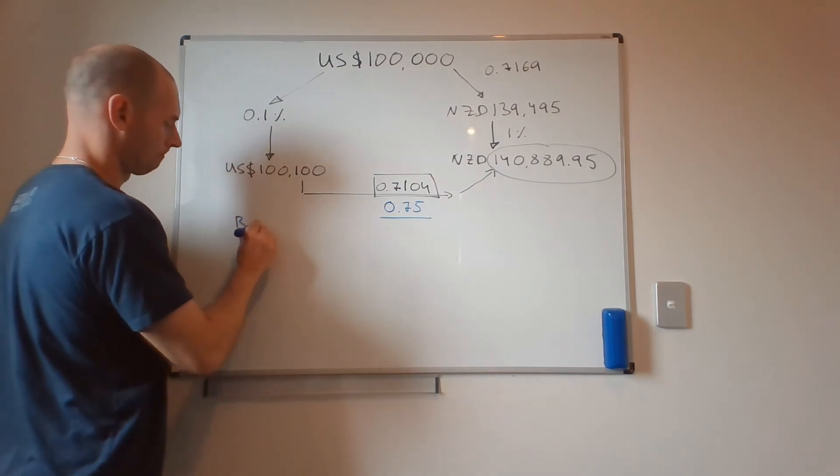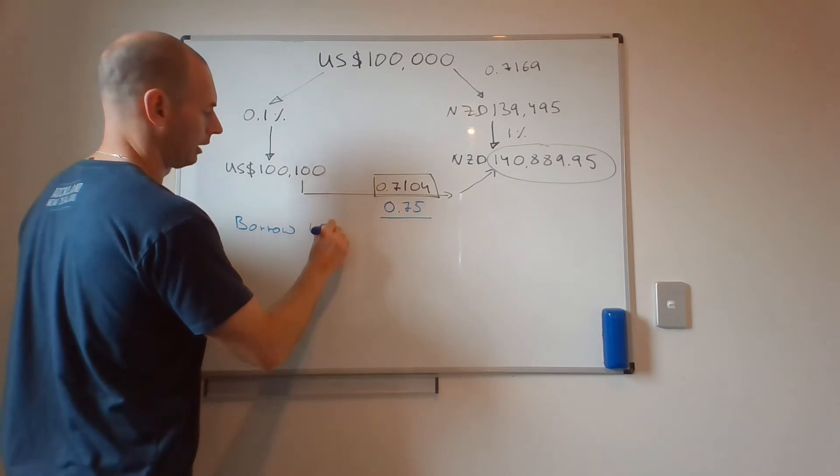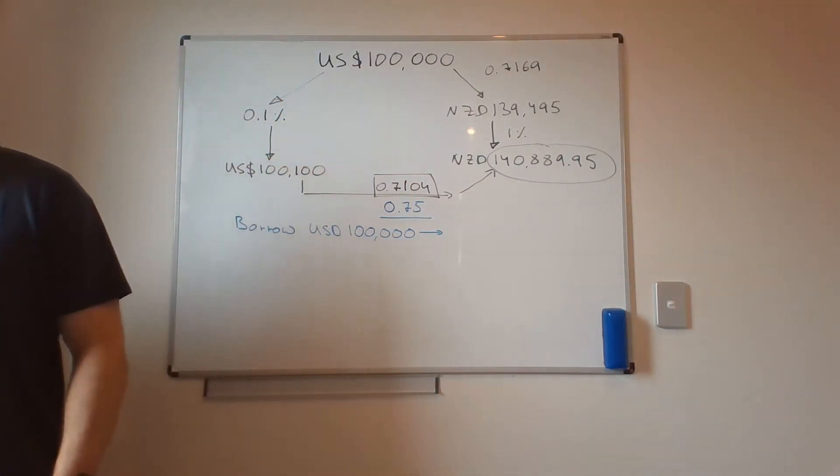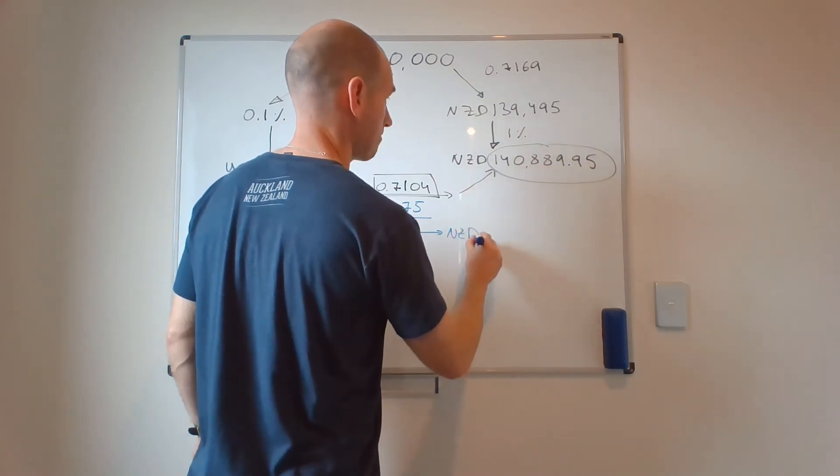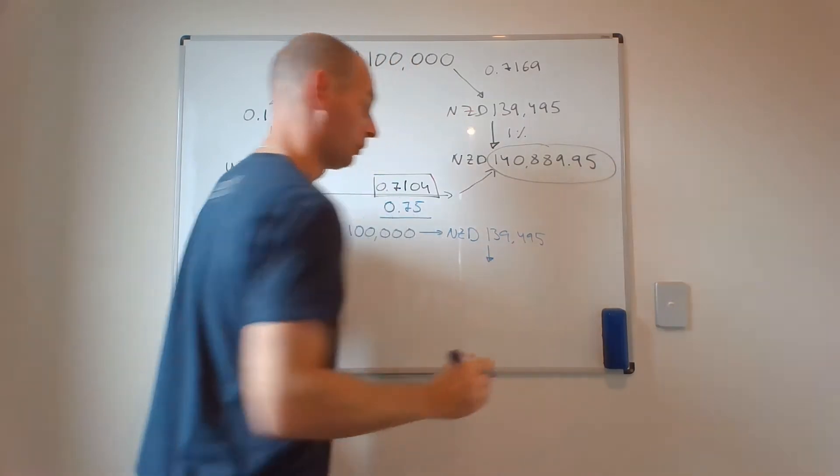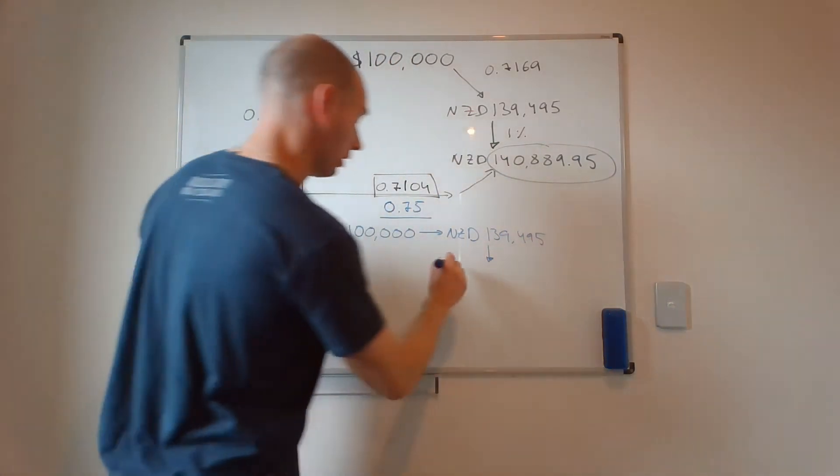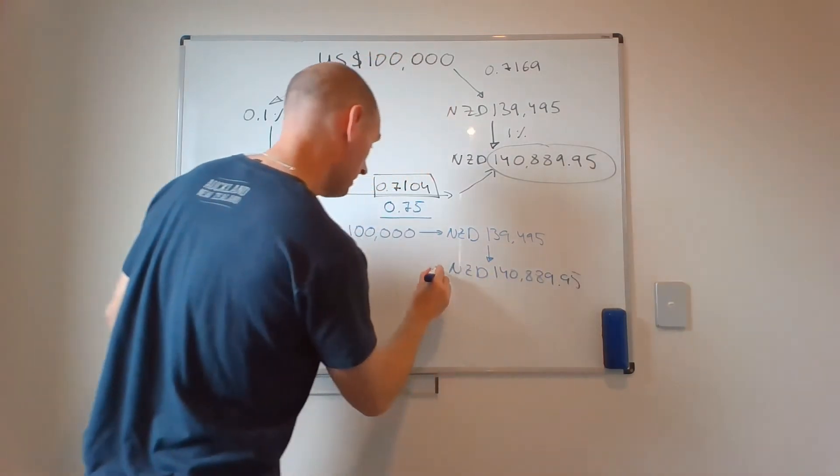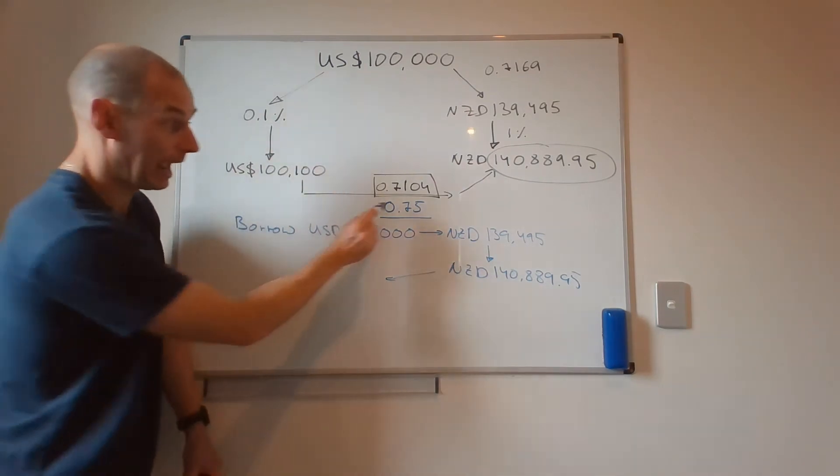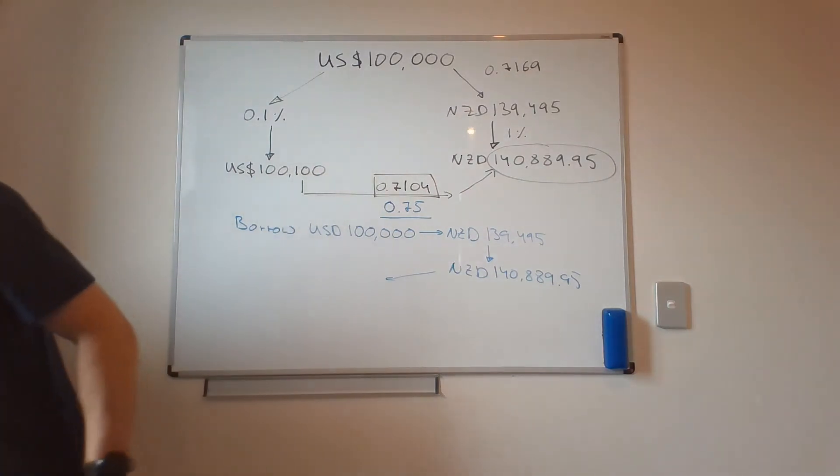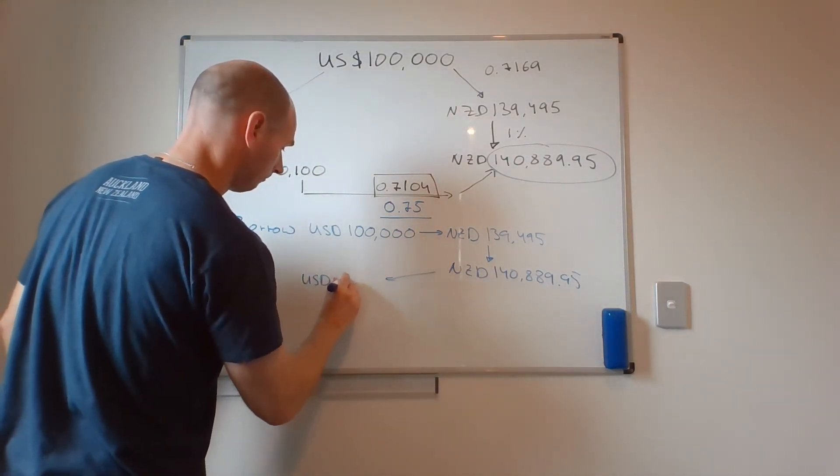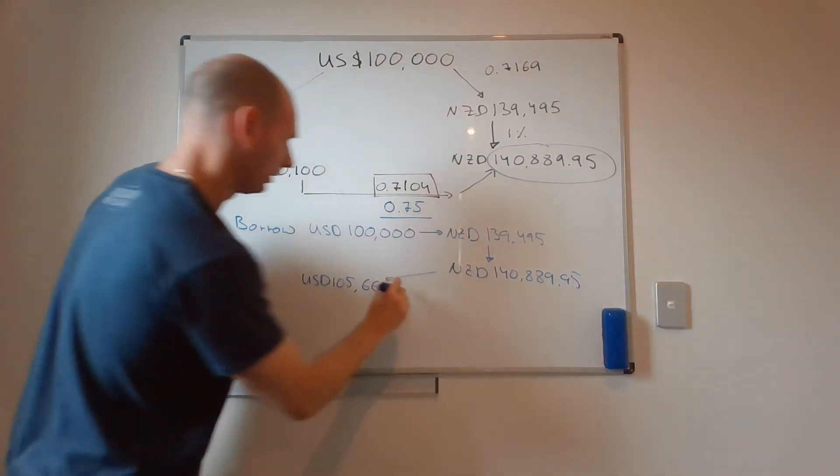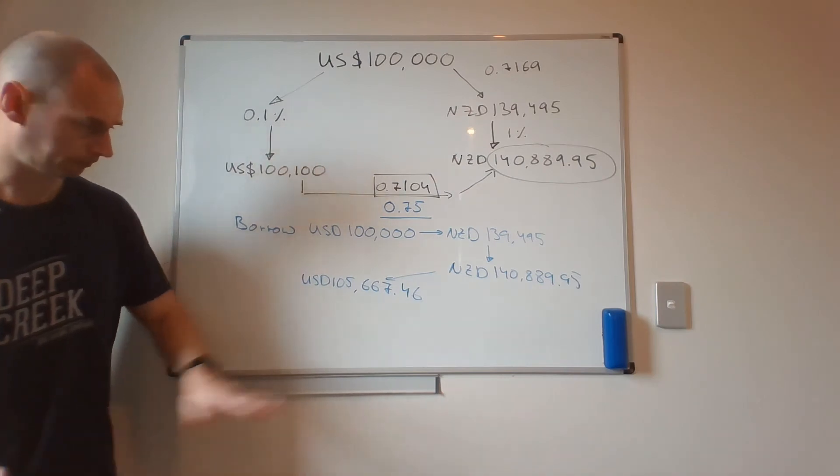I will borrow $100,000 US dollars. I will immediately transfer them into New Zealand. I will deposit them in New Zealand. So in a year I will get NZ$105,000. And then I will transfer them back into American dollars at this exchange rate, not at this one, but at this one. And I will get $105,667 and change.